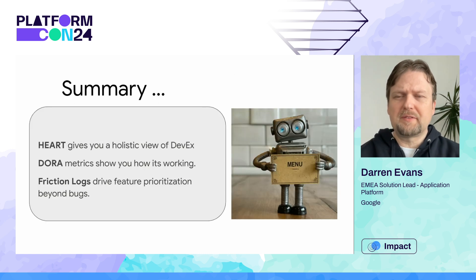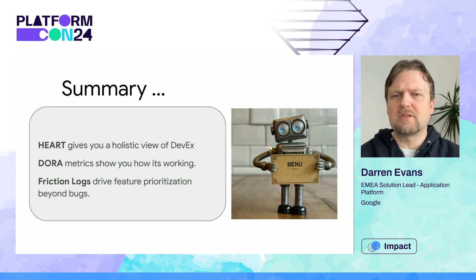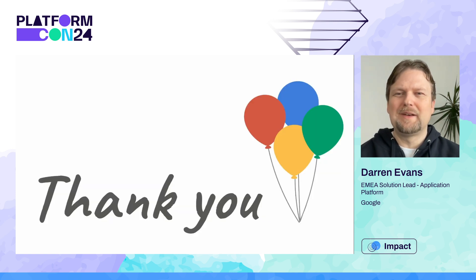To summarize: Heart offers a holistic assessment of your developer's experience. DORA metrics track the impact of your changes. Friction logs pinpoint user pain points, guiding feature prioritization beyond bugs for maximum impact. I hope that you found this useful — see you around.